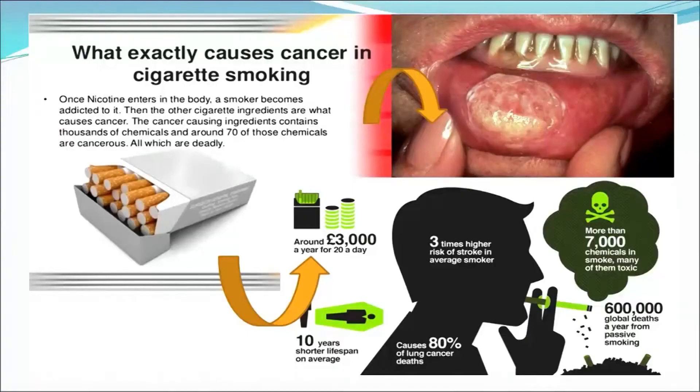Do you know why? Once nicotine enters the body, a smoker becomes addicted to it. The other secret ingredients are what causes cancer — containing thousands of chemicals, around 70 of which are cancerous, all deadly. It is because tobacco contains a powerful substance called nicotine which takes less than 20 seconds to reach the brain from inhaled cigarette smoke. The main way that smoking causes cancer is by damaging our DNA, including key genes that protect us against cancer.